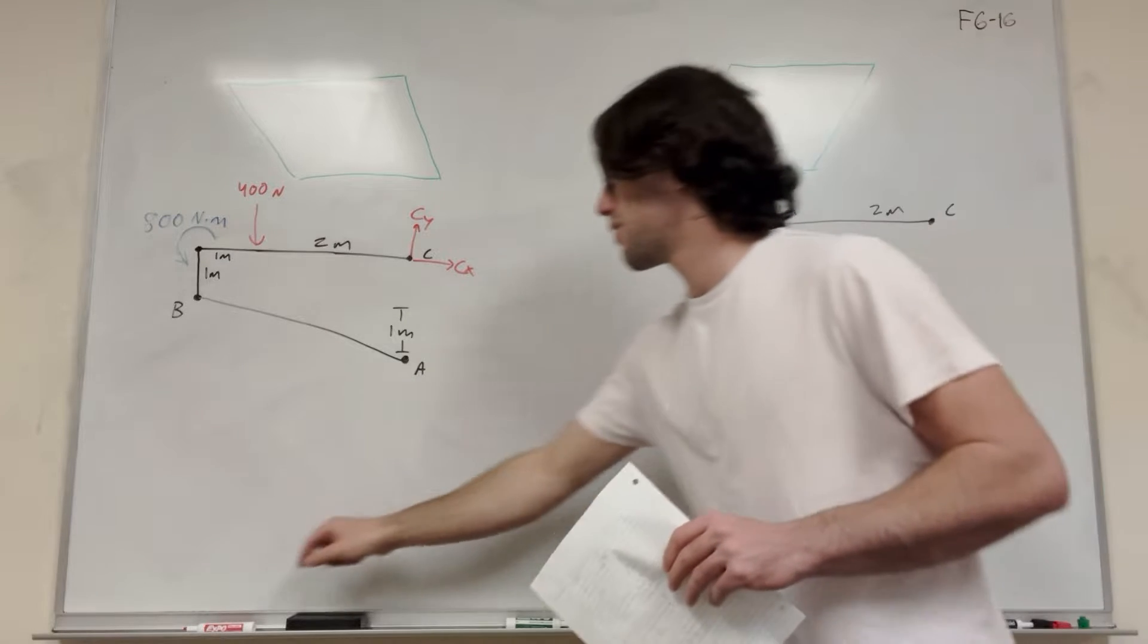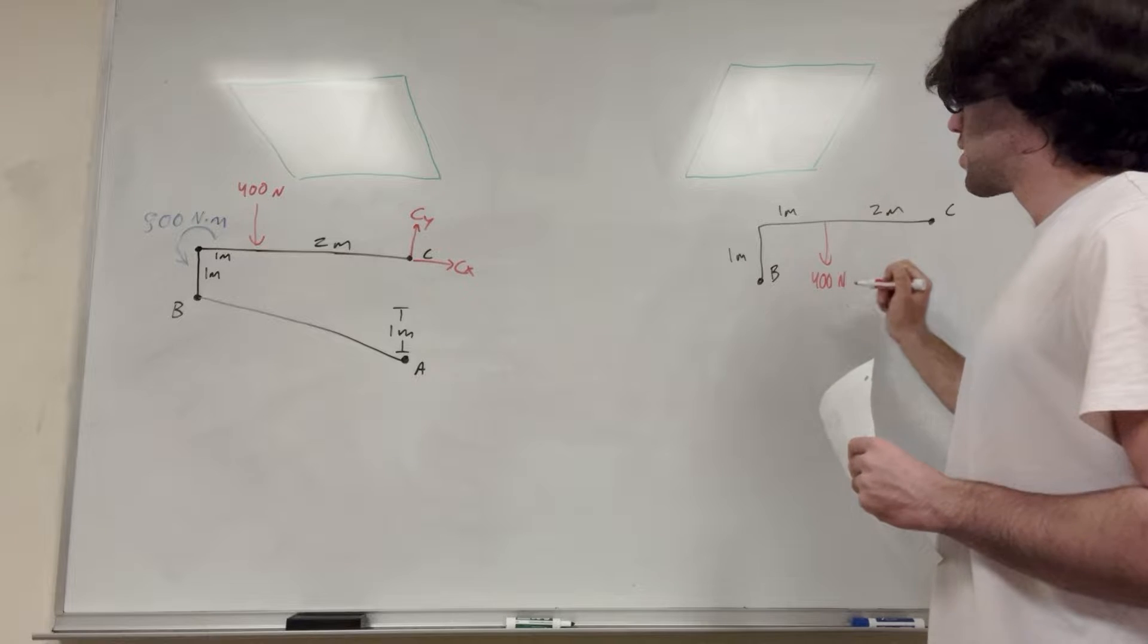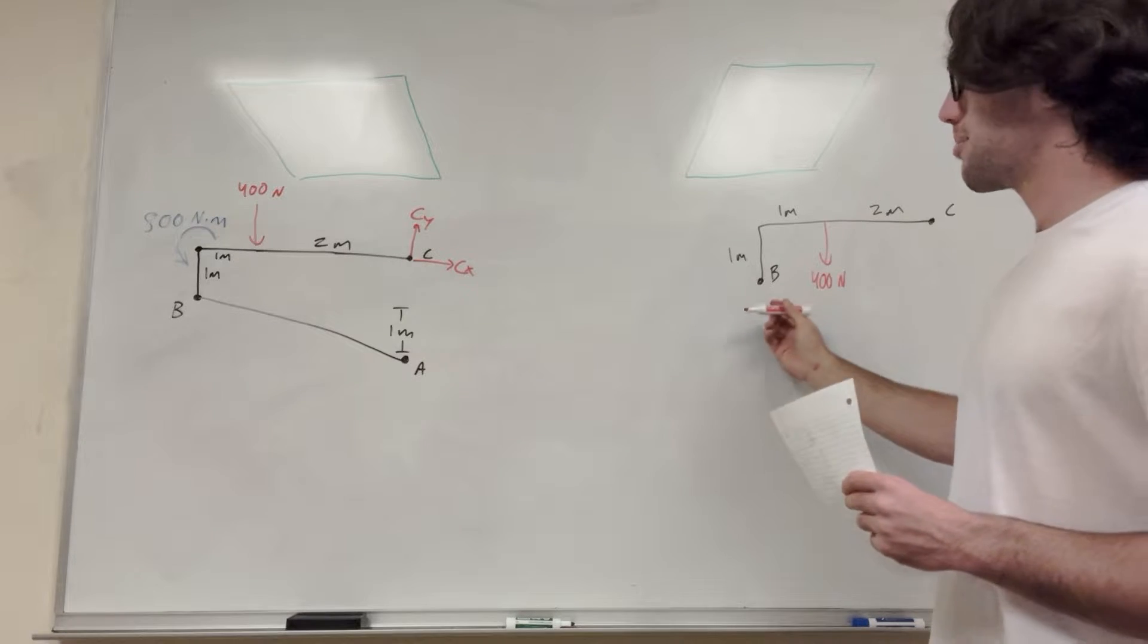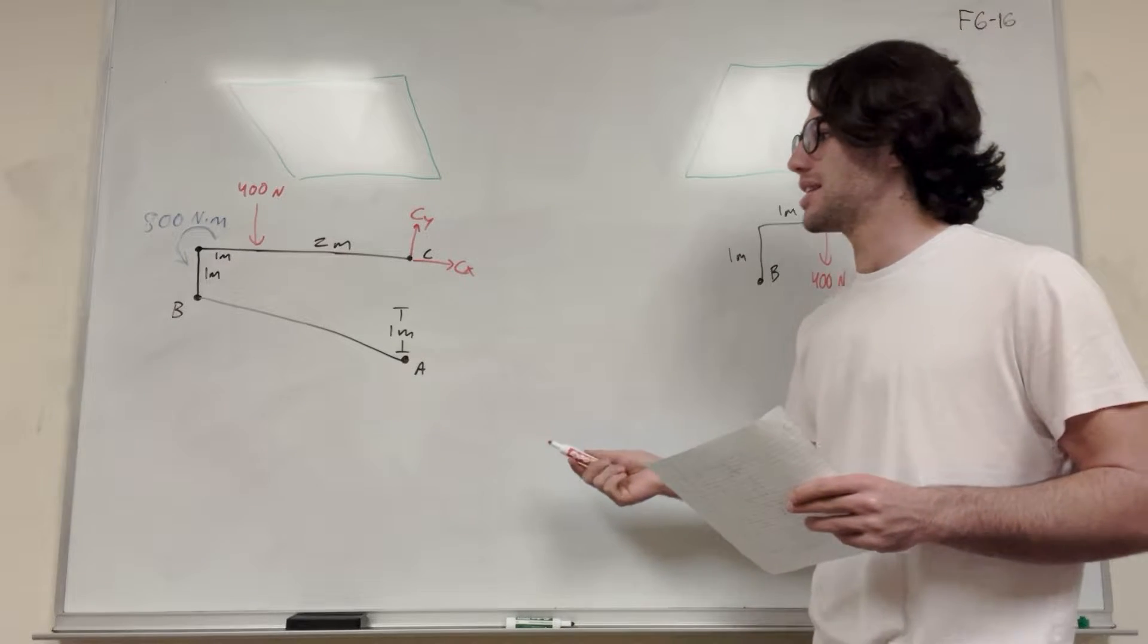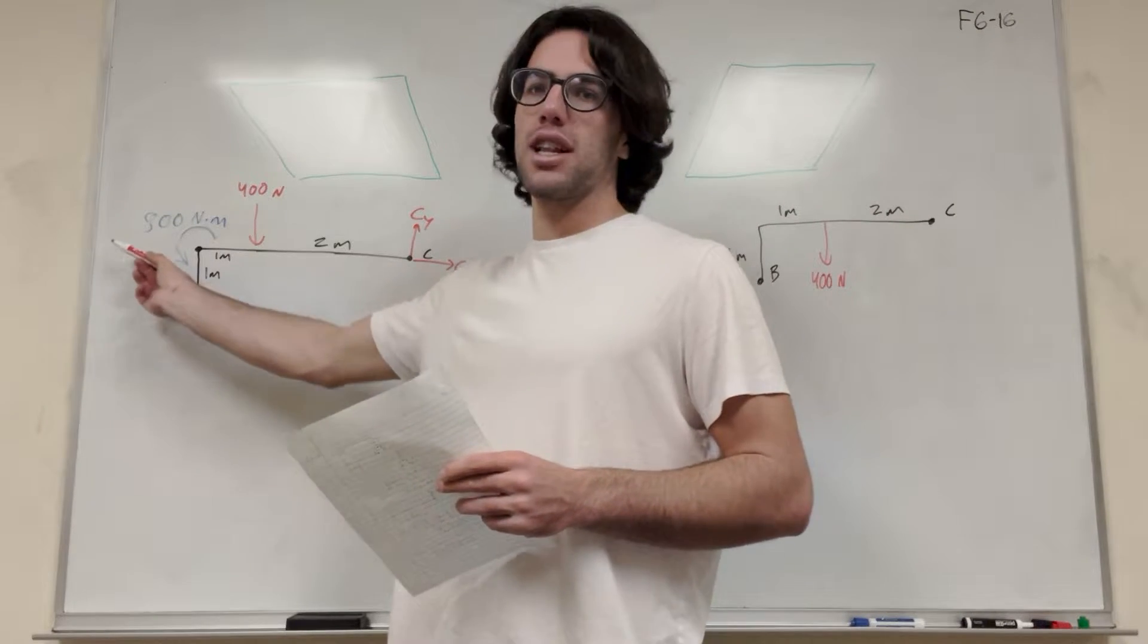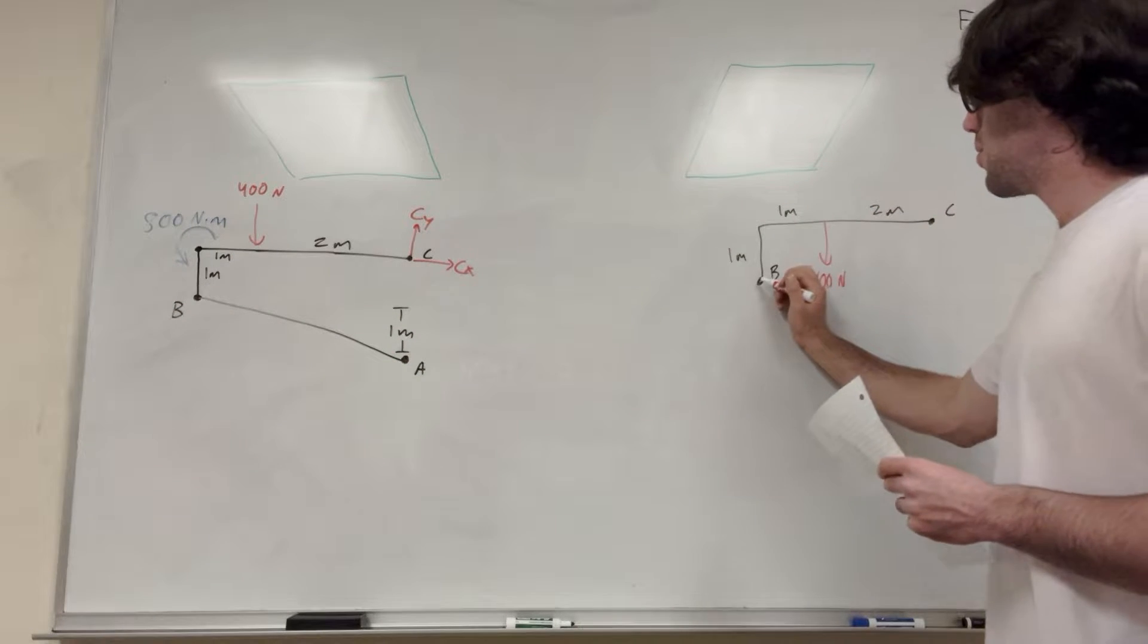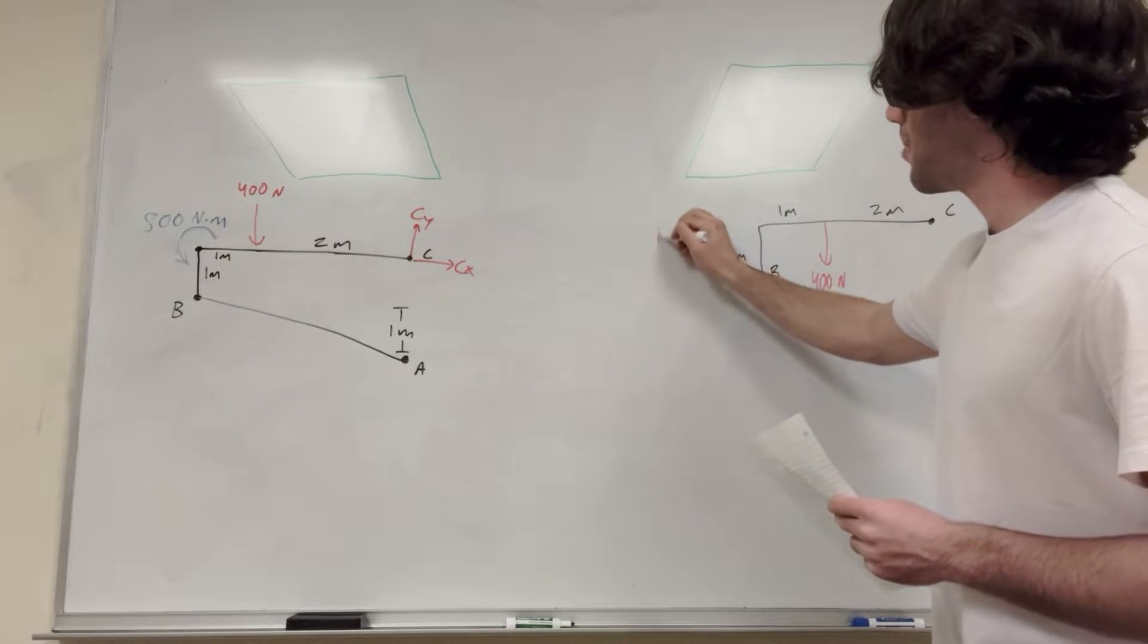We still have this 400 newton force pushing down. I'm going to draw it back here. And then now AB is going to be replaced with a different rod that's acting on BC. So AB is going to push this way. It's going to push in that direction. So we're going to draw that force. So this is force AB.